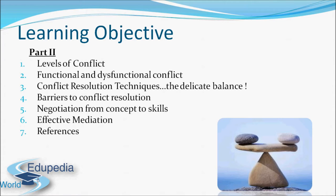Number 4: what are the various barriers to conflict resolution — why some people are good and some are not, and what happens when conflicts do not get resolved? Number 5: we will deal with the concept of negotiation skills, which is very important in any organization. Last but not least is effective mediation and the process of mediation. We will also give references of books for further study.